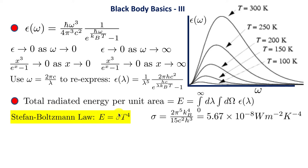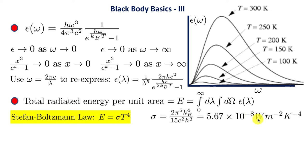Remarkably, the Stefan-Boltzmann law E = σT⁴ was derived long before the Planck formula — that is, long before quantum mechanics. At the time, Stefan and Boltzmann took σ as an empirically determined constant. Its experimentally measured value of 5.67 × 10⁻⁸ W m⁻² K⁻⁴ is consistent with the theoretical value expressed in terms of the fundamental constants k_B, c, and h.